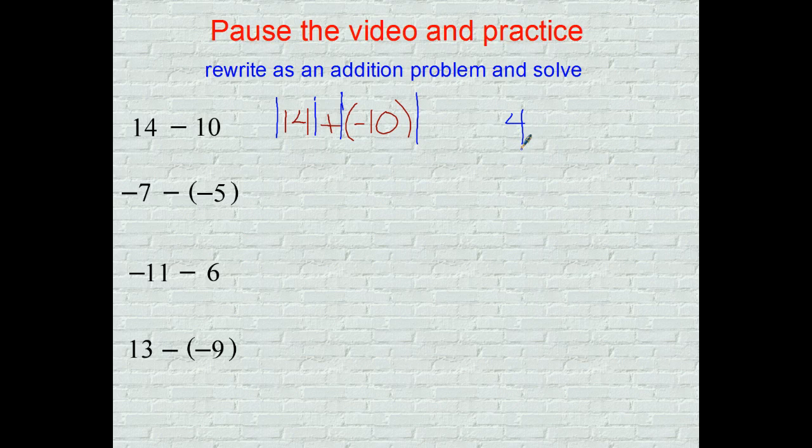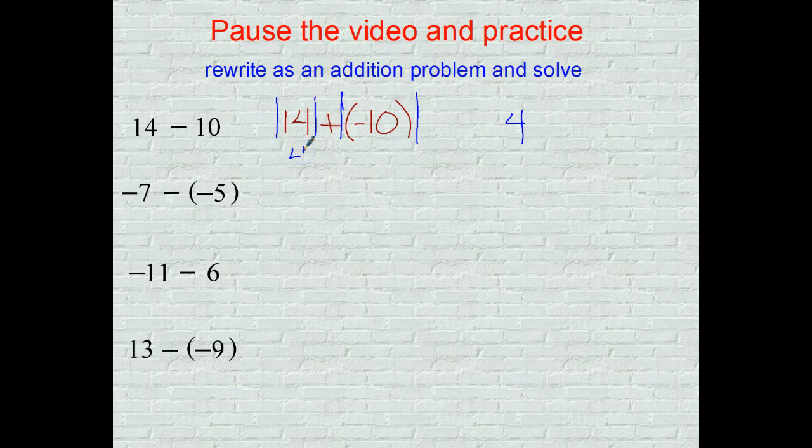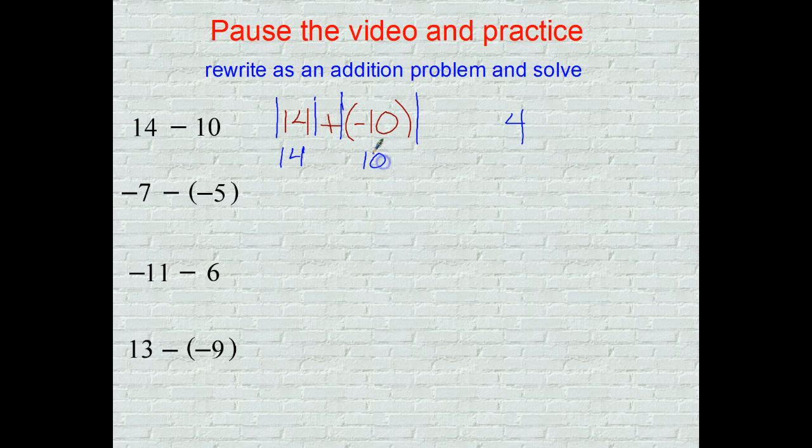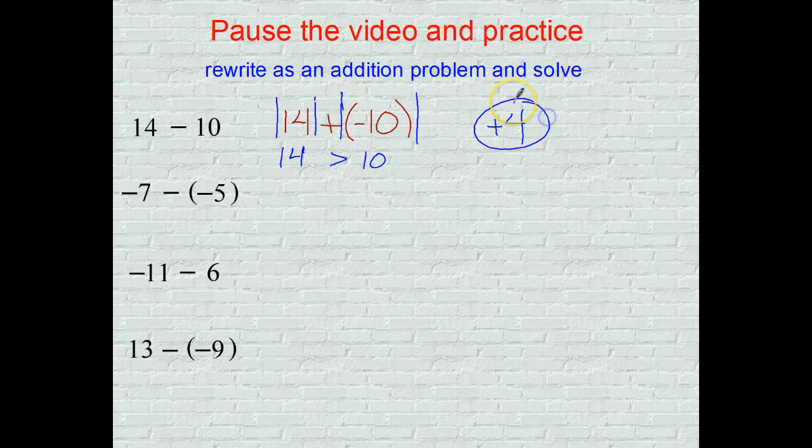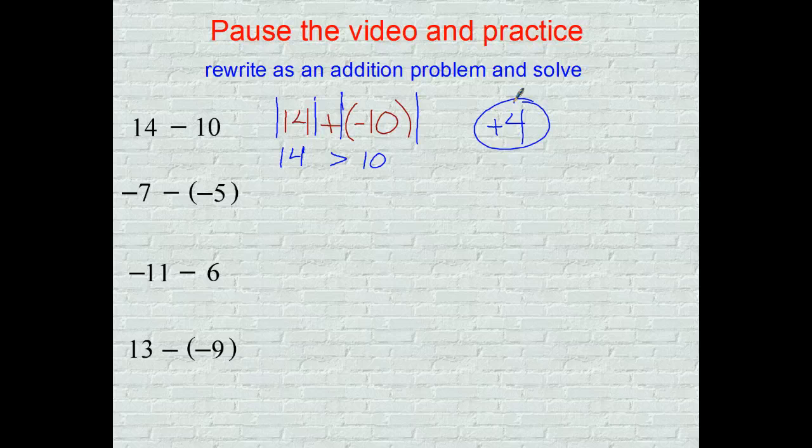Who wins the absolute value battle? The absolute value of 14 is 14, the absolute value of negative 10 is 10, and the positive answer which was with the 14 wins out. So the answer is positive 4, and you already knew that.